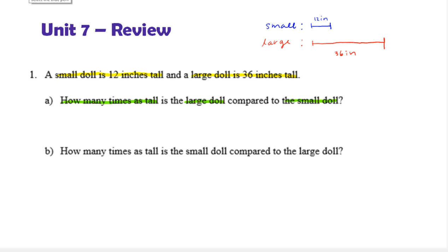So, I made a diagram up here just for us to get a feel, and we're comparing the large doll to the small doll. Notice it said how many times as tall, so we don't want to find the difference which would be 24 inches. We want to see how many copies of the small doll would it take to equal the large doll. Or equivalently, what number would we multiply by the small doll's height to get the large doll's height.